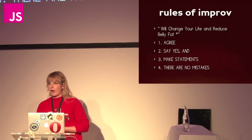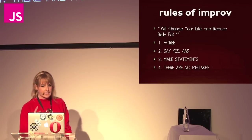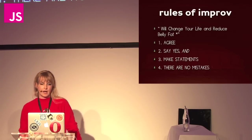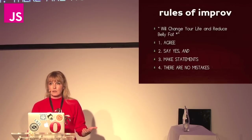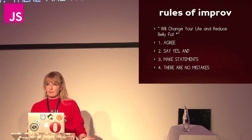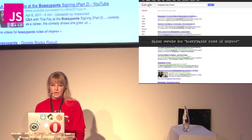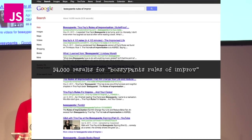This brings us to Tina Fey's rules of improv that will change your life and reduce belly fat, asterisk. They are: one, agree; two, say yes and; three, make statements; four, there are no mistakes. Agreeing is obvious. Saying yes and means don't simply agree but add something else to whatever's being discussed. Make statements means don't ask questions but describe what's going on. And there are no mistakes is also obvious. I searched for Bossypants rules of improv on Google and got 14,000 results, so Tina Fey is apparently an authority on this.